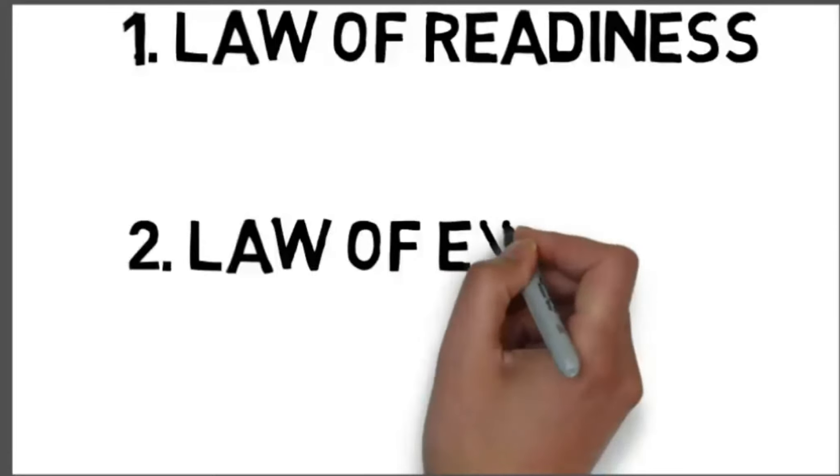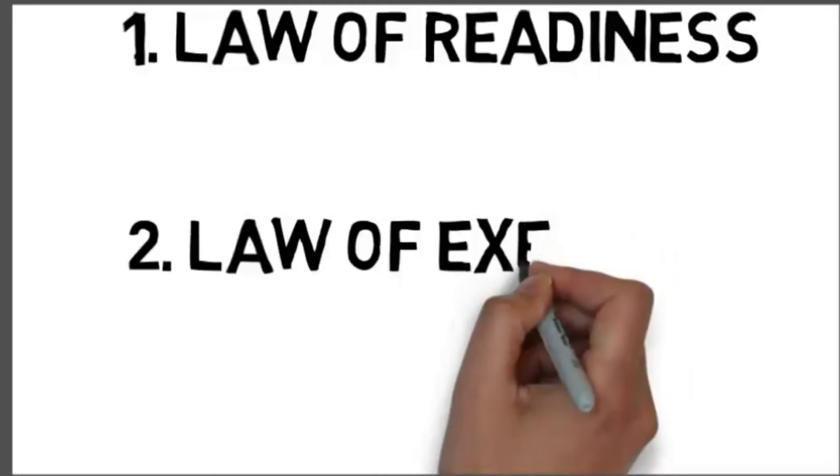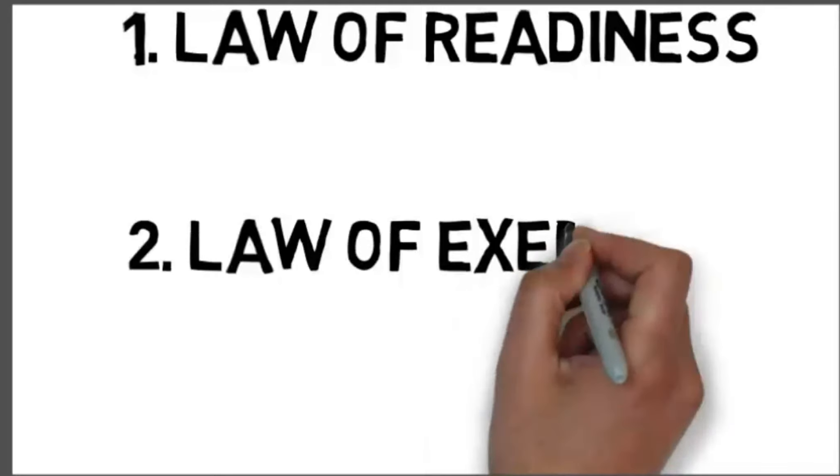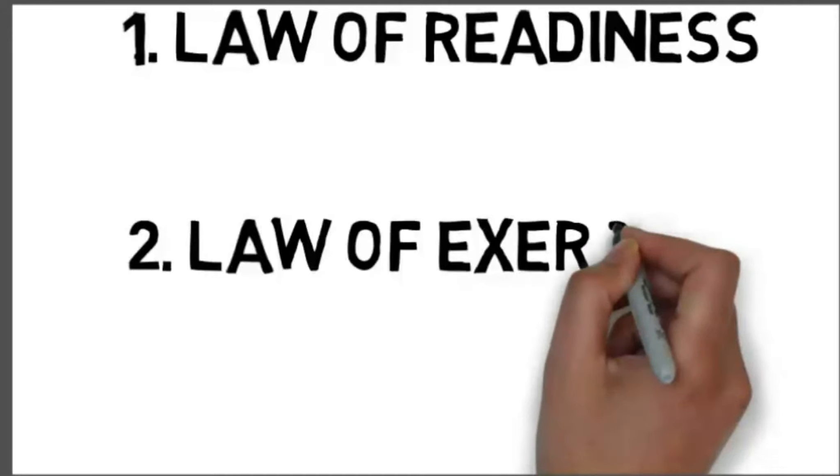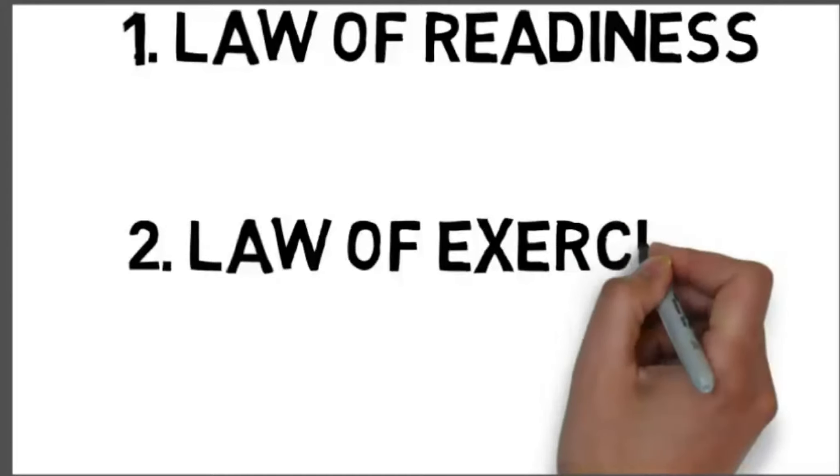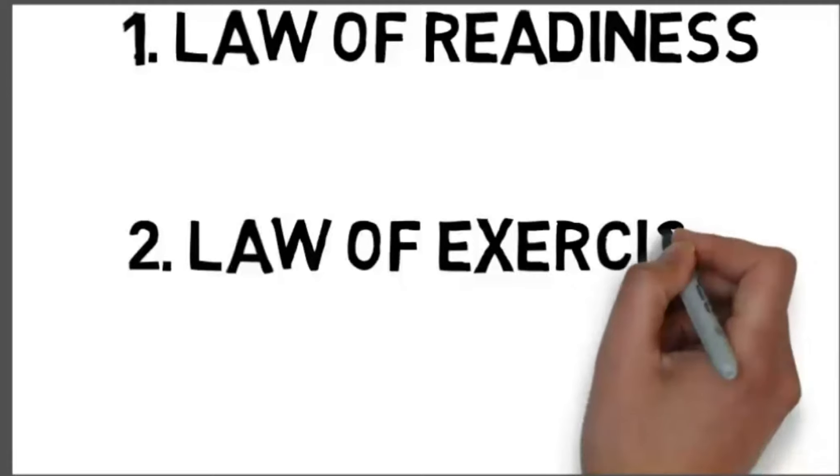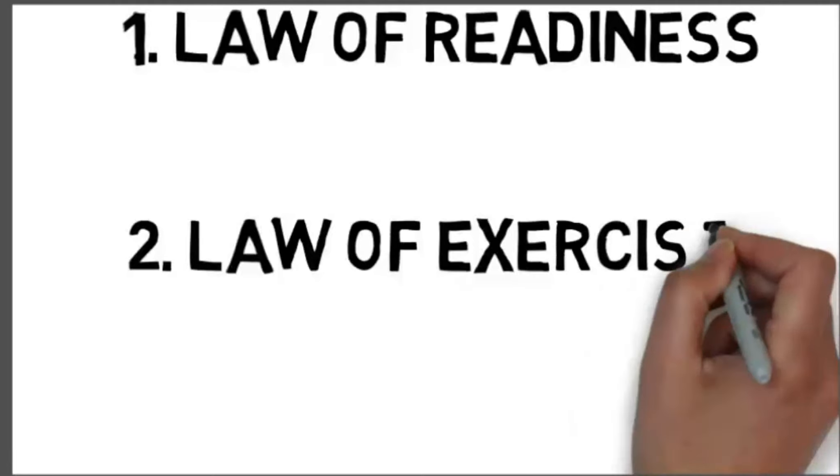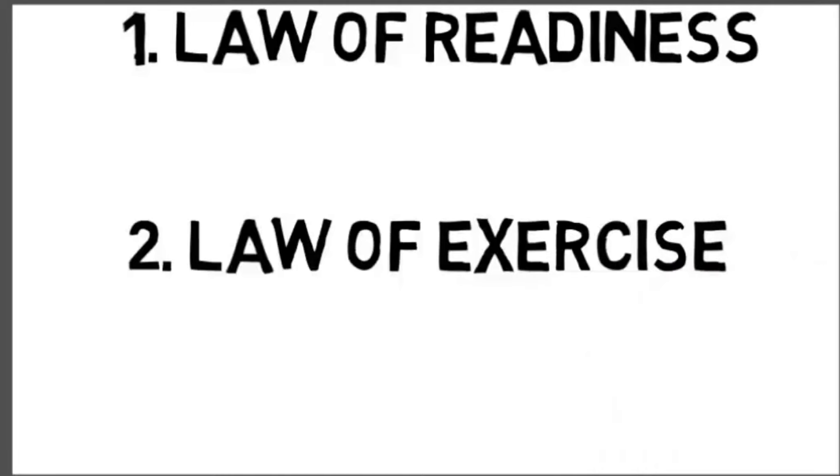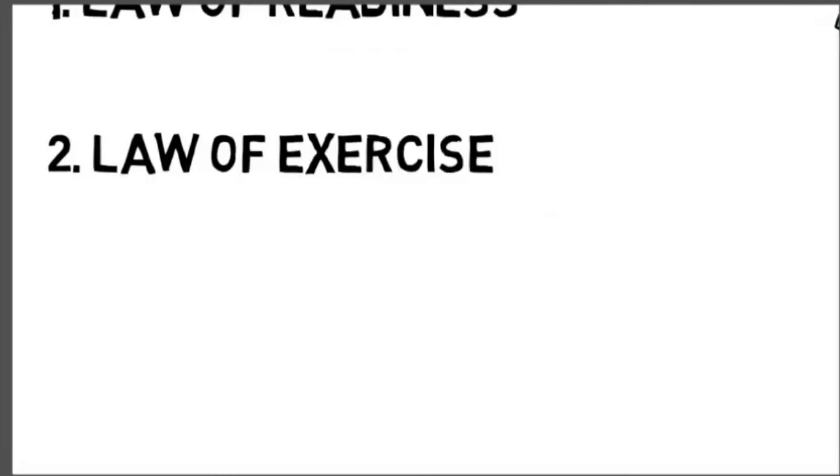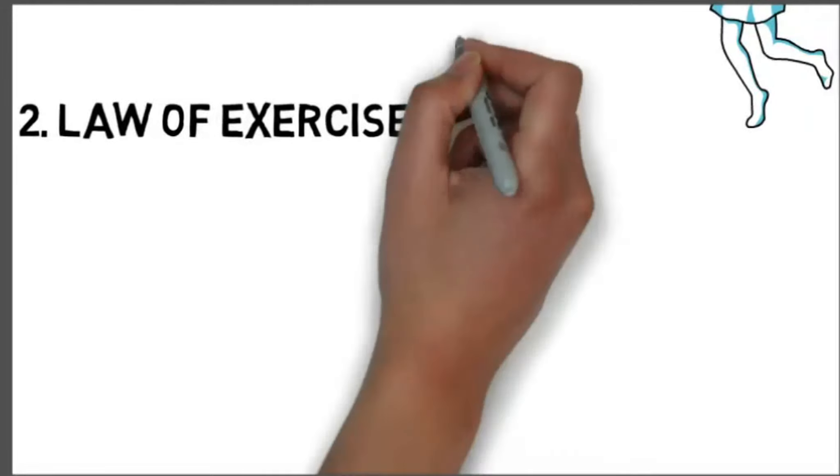The second law of exercise. This law explains the role of practice in learning. According to this law, learning becomes efficient through practice or exercise. The dictum 'practice makes perfect' goes very well with this law. This law is further split into two parts: law of use and law of disuse. The law of use means that a connection between a stimulus and response is strengthened by its occurrence, its exercise, or its use. In other words, the use of any response strengthens it. It makes it more prompt, easy, and certain.